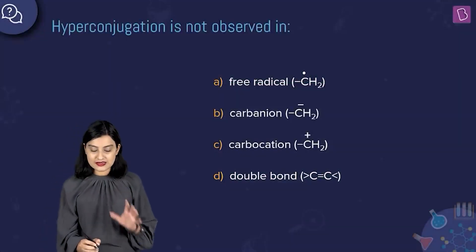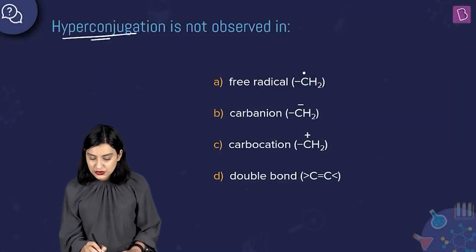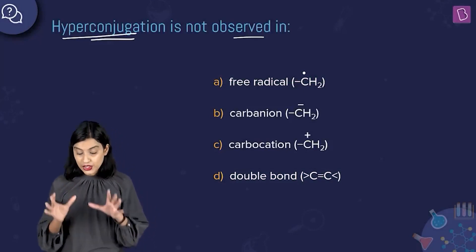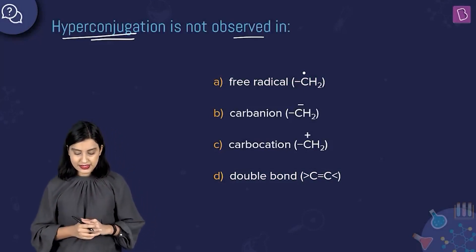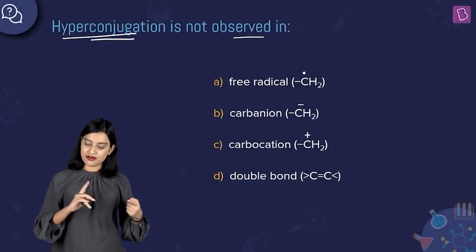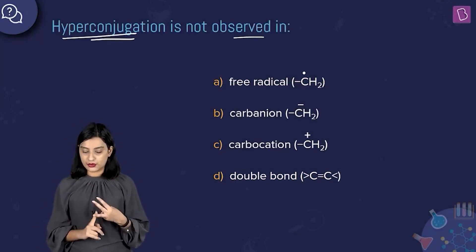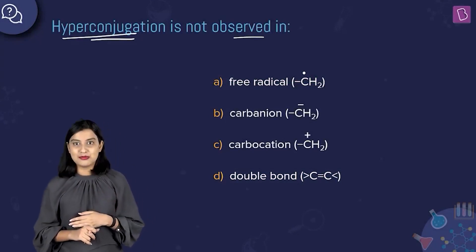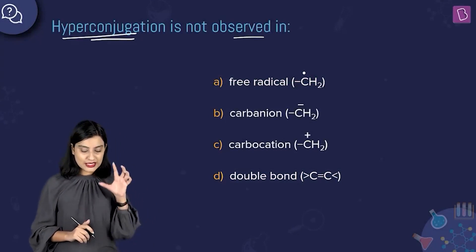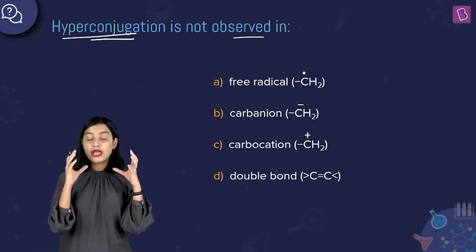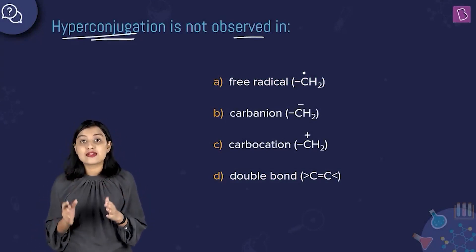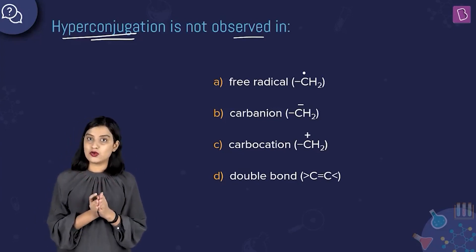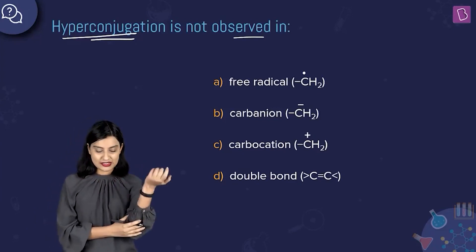Alright, so here they're asking us: hyperconjugation is not observed in which of these? Your options are free radical, carbanion, carbocation, and option D is double bond. So we need to talk about in which of these options we do not observe hyperconjugation.